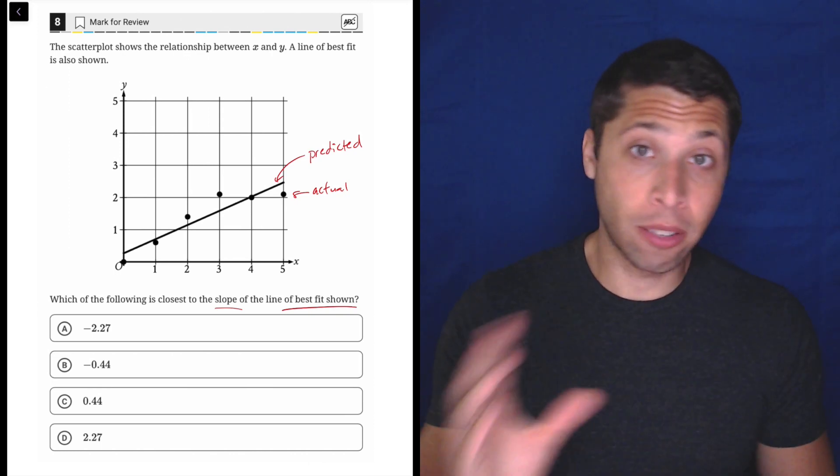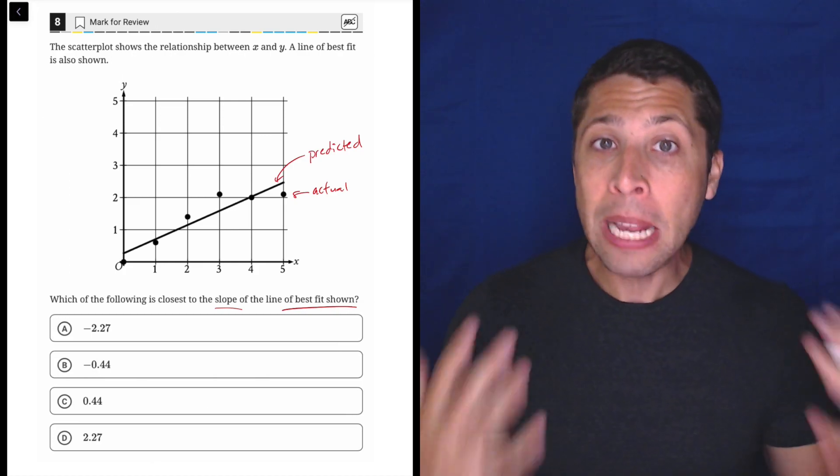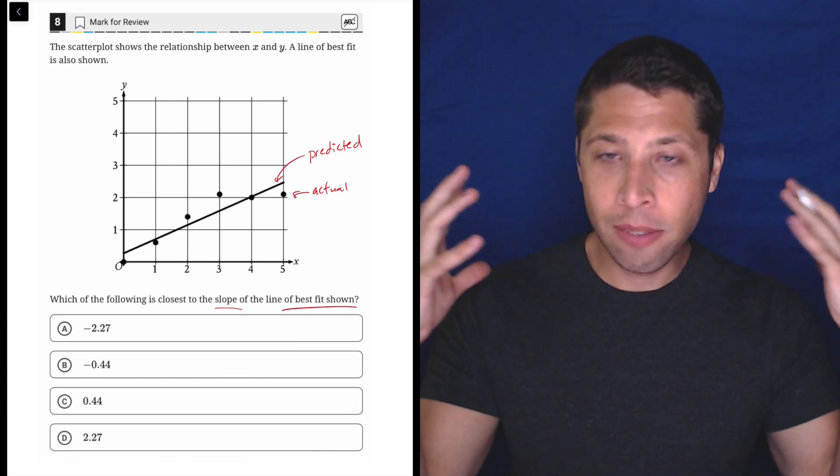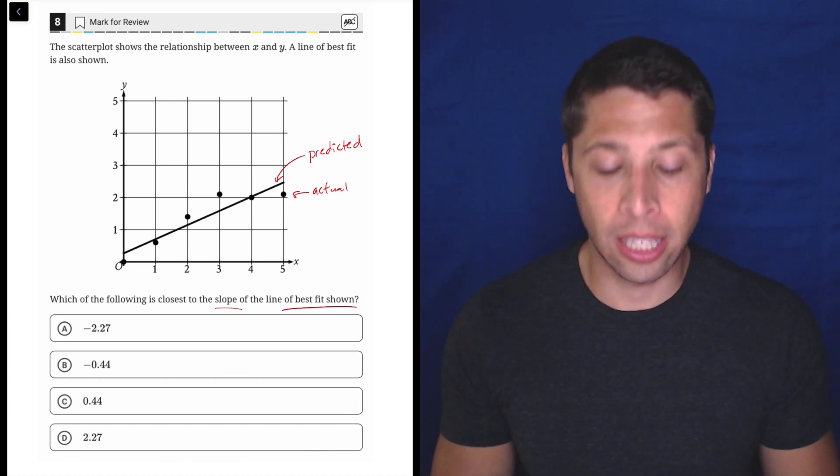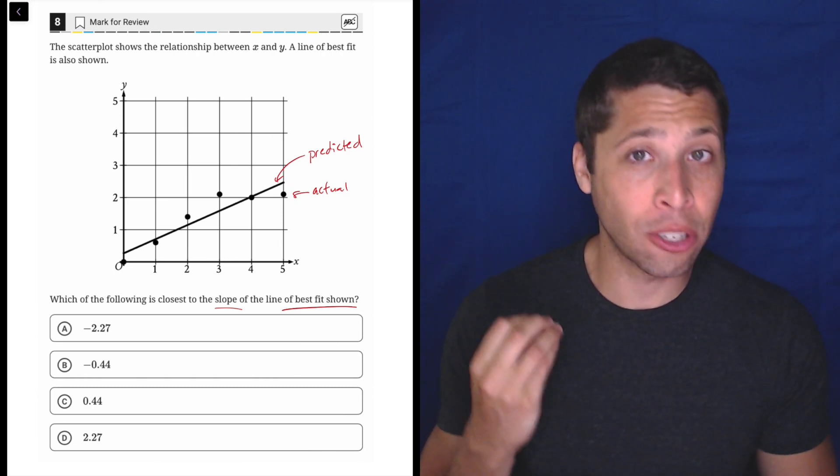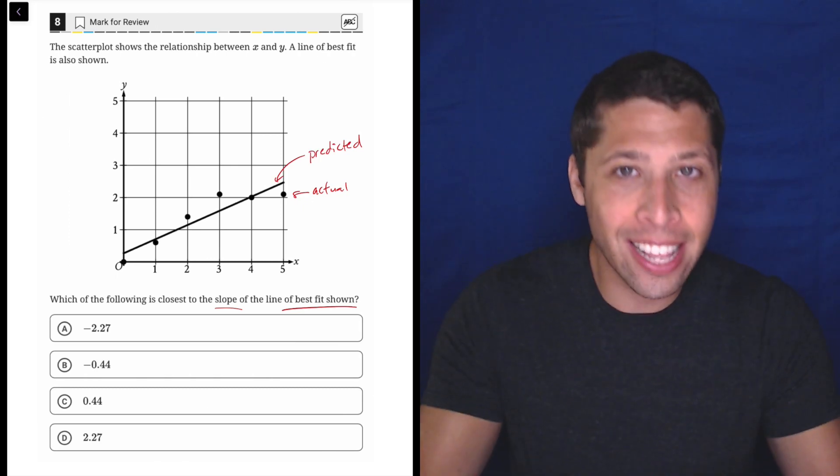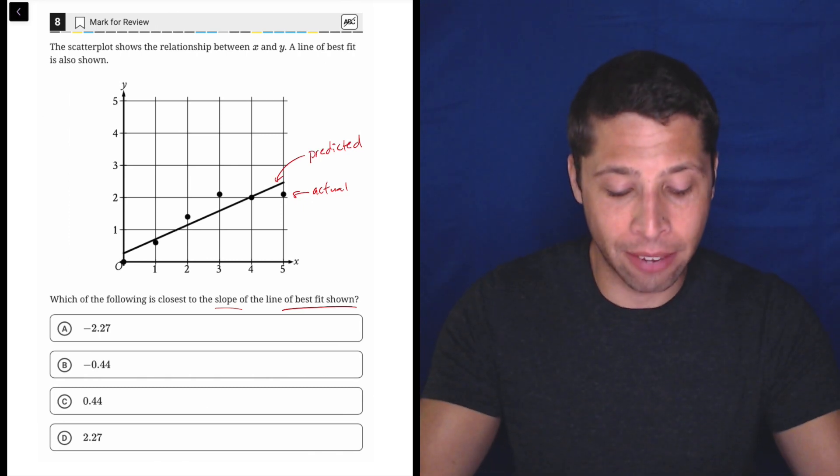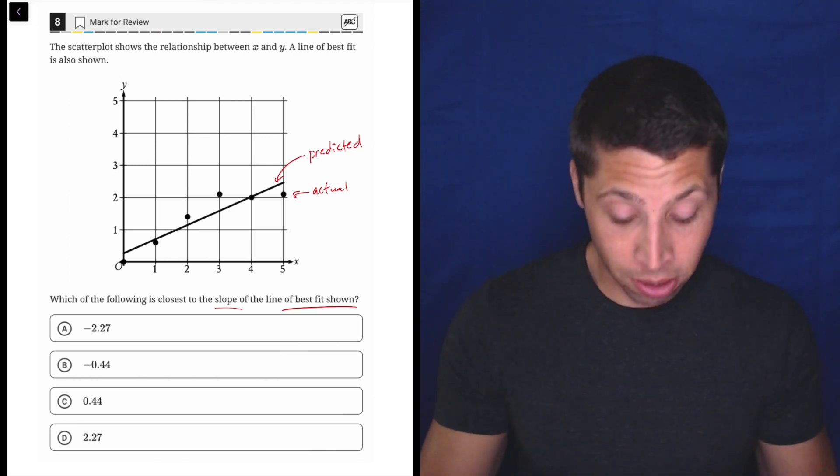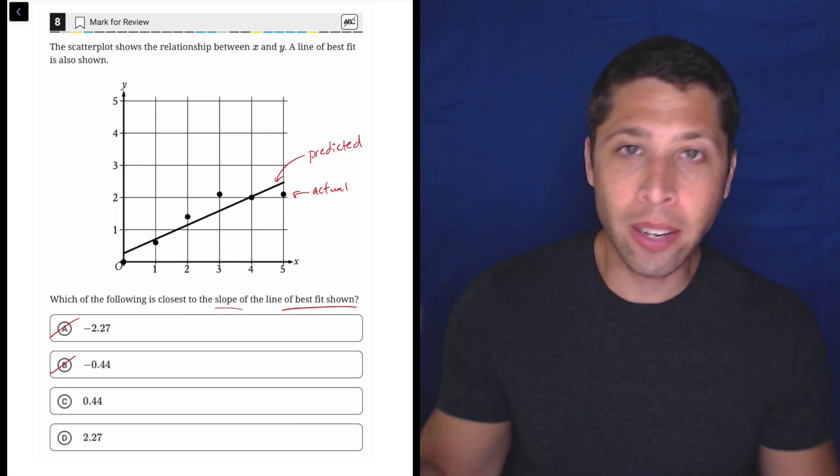So here, they're asking for the slope of the line. And this gets to my next point, the thing that many people, even well into calculus, continuously mess up when they're looking at lines. We have to think about positive and negative slopes. That should be something that is automatic. A lot of people will do all this work calculating a slope and then forget that it's negative or somehow lose that negative. This is a positive slope, right? It's going up to the right. So the first thing you should do is just cross out choices A and B. Just get rid of the negatives.